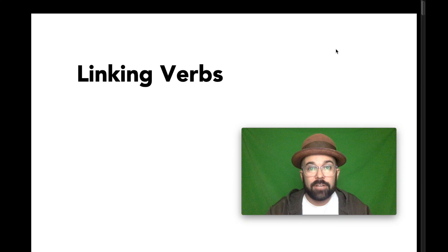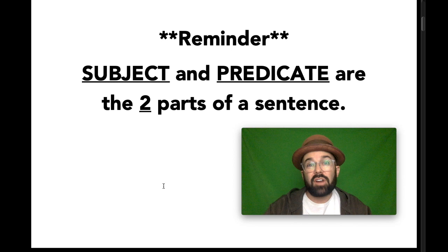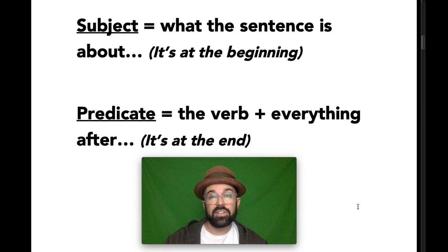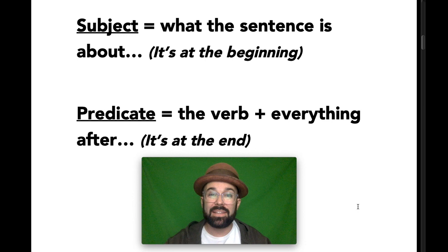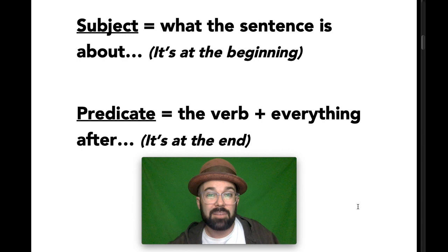First, an important reminder. In order to understand how linking verbs work, we need to remember that a sentence has two parts to it: the subject of the sentence and the predicate of the sentence. The subject of the sentence is what the sentence is about. We can simplify the subject to the simple subject, which is just the noun or the pronoun that the sentence is about. But in the complete subject, we also may have adjectives, prepositional phrases, articles, etc. What we'll mostly be talking about is the simple subject, because that's the most important part — it's at the beginning of the sentence, before the verb.